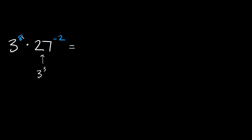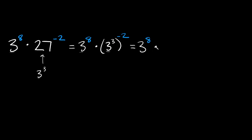So here we have three to the eighth power, and then we're going to multiply that by three cubed raised to the negative second power. We got the same base, so now we can simplify. We have a power raised to another power, so we multiply them together: three times negative two is equal to negative six. So here we're going to have three raised to the negative sixth power.